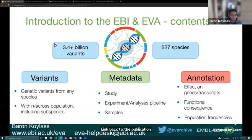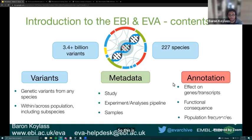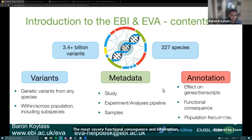Some figures on what's in the EVA: we currently hold about 3.4 billion-plus variants across 227 species. We hold the variants and the metadata, which includes the study, experiment, analysis, pipeline, and samples. We also run the Ensembl Variant Effect Predictor on incoming variants, providing information on the effects of variants on genes and transcripts, the most severe functional consequence, and population frequencies across studies.